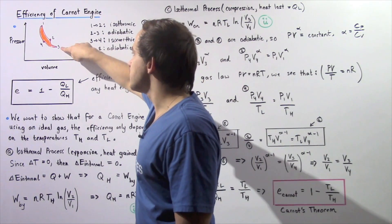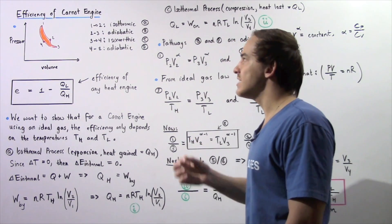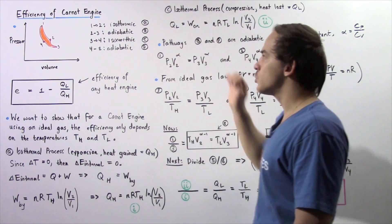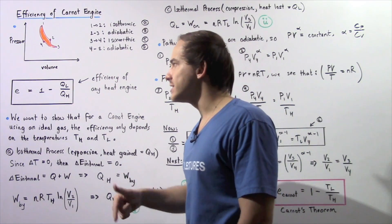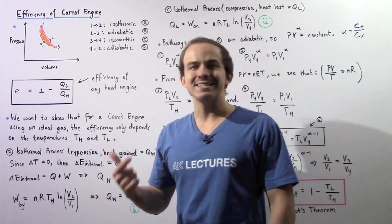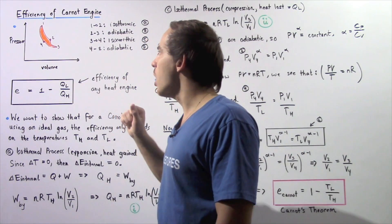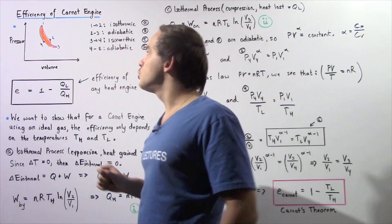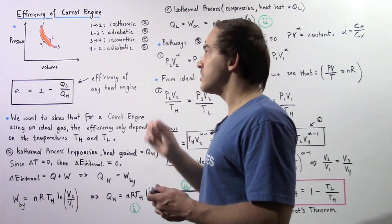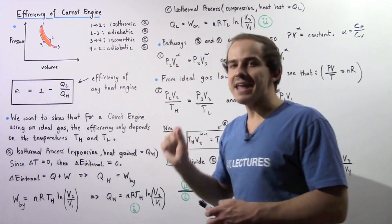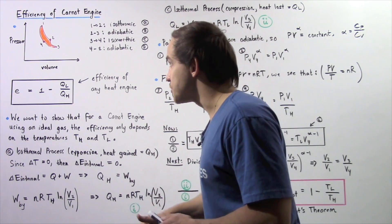Next, we go from position 3 to position 4, and that is once again an isothermal process — let's call that process C — but now our volume decreases, so the gas is compressed. Finally, when we go from position 4 to position 1, we return to our initial position, and that process is an adiabatic process, so our temperature decreases.